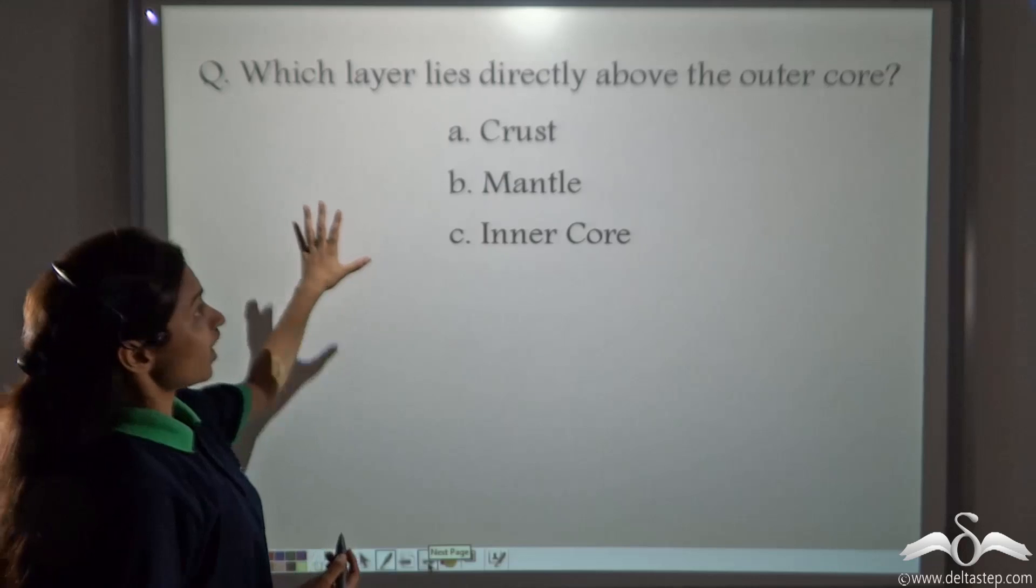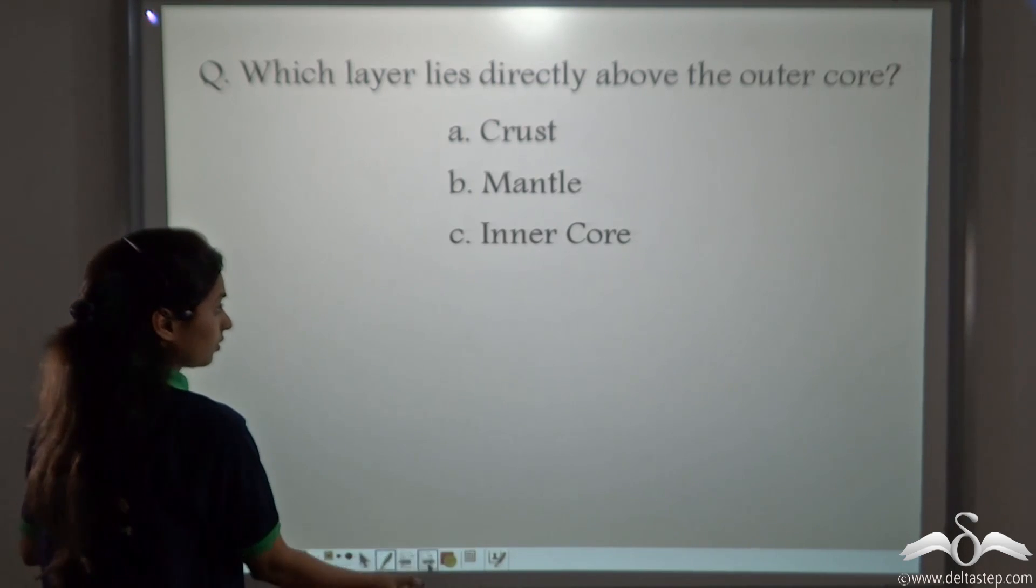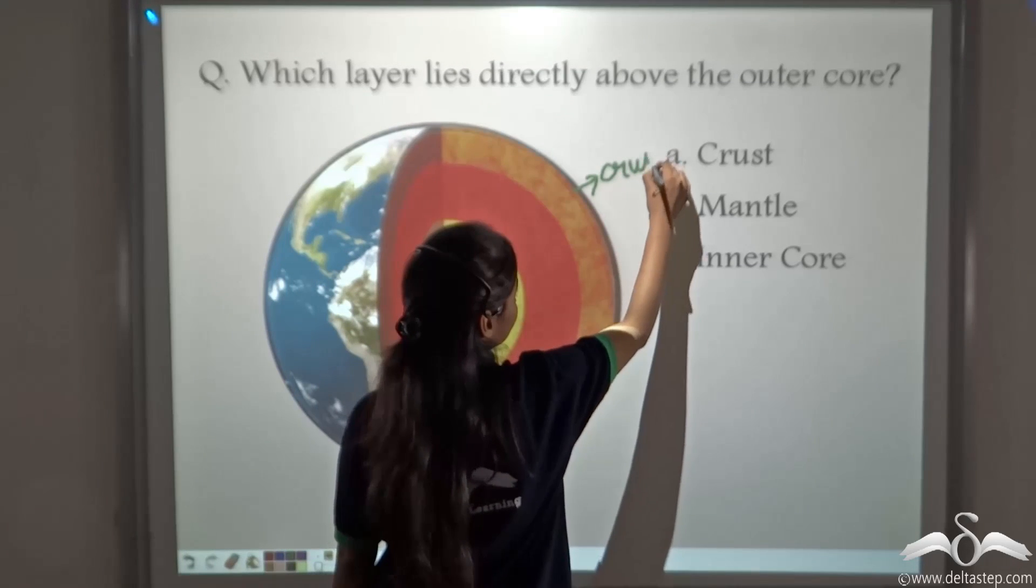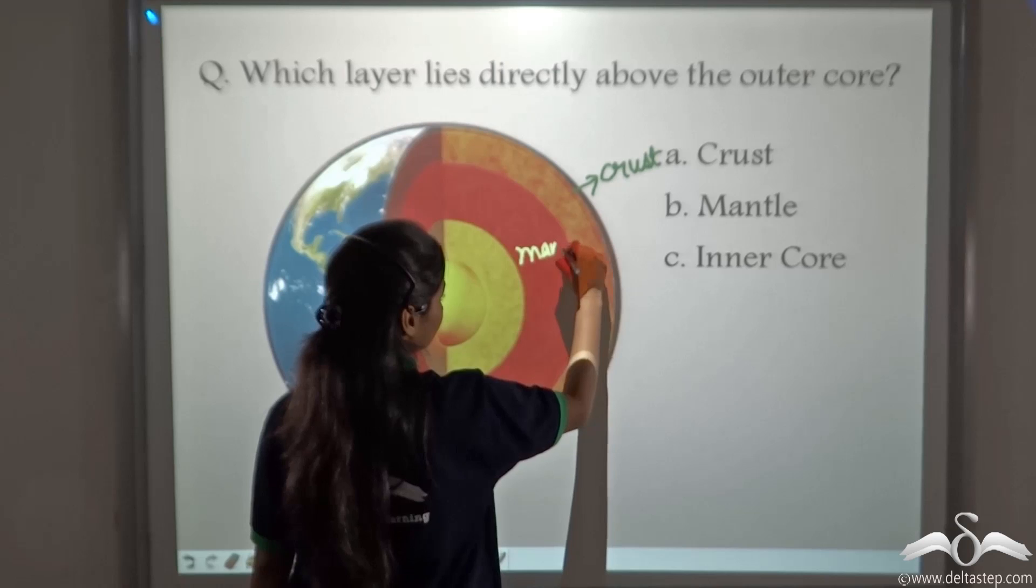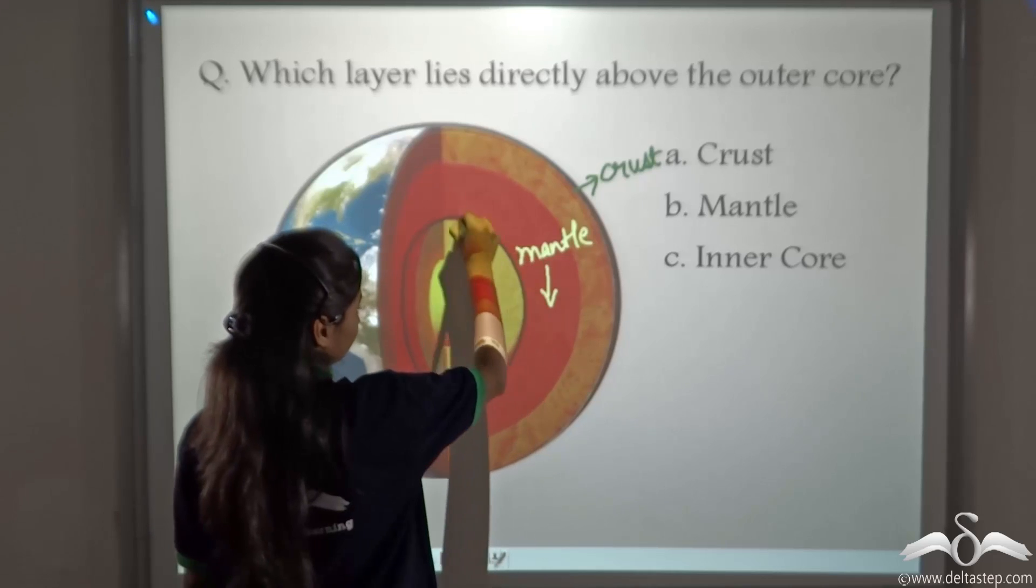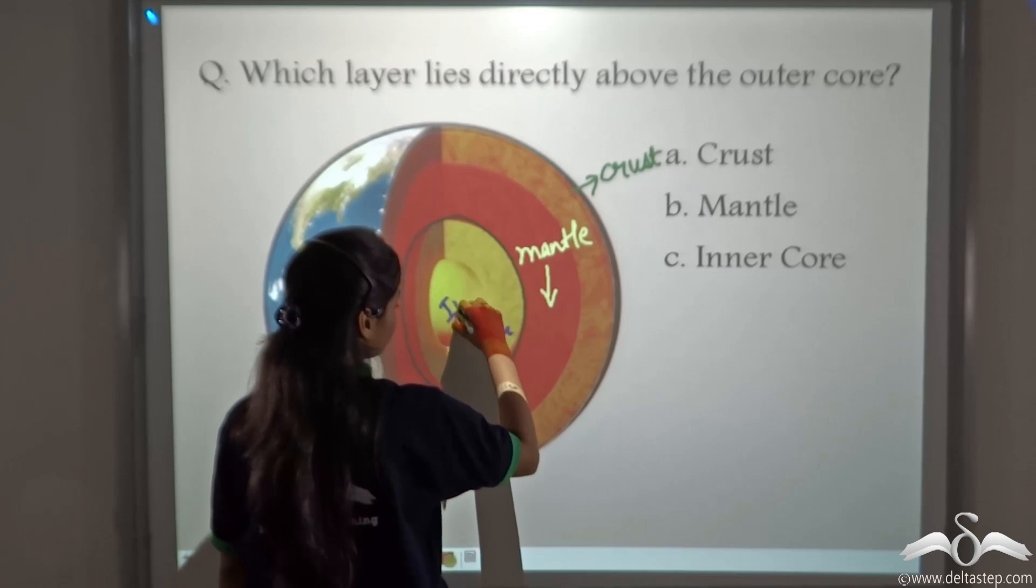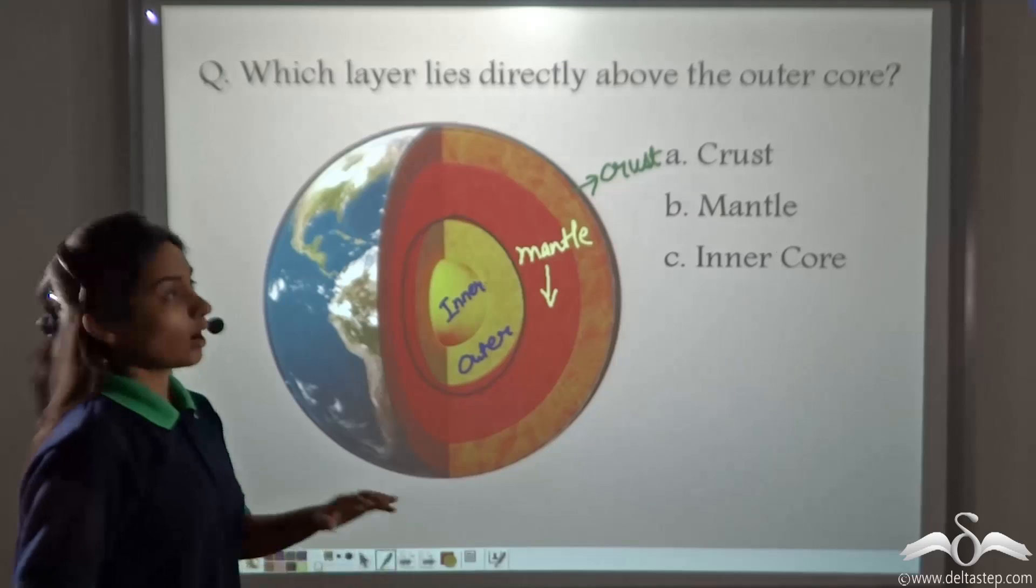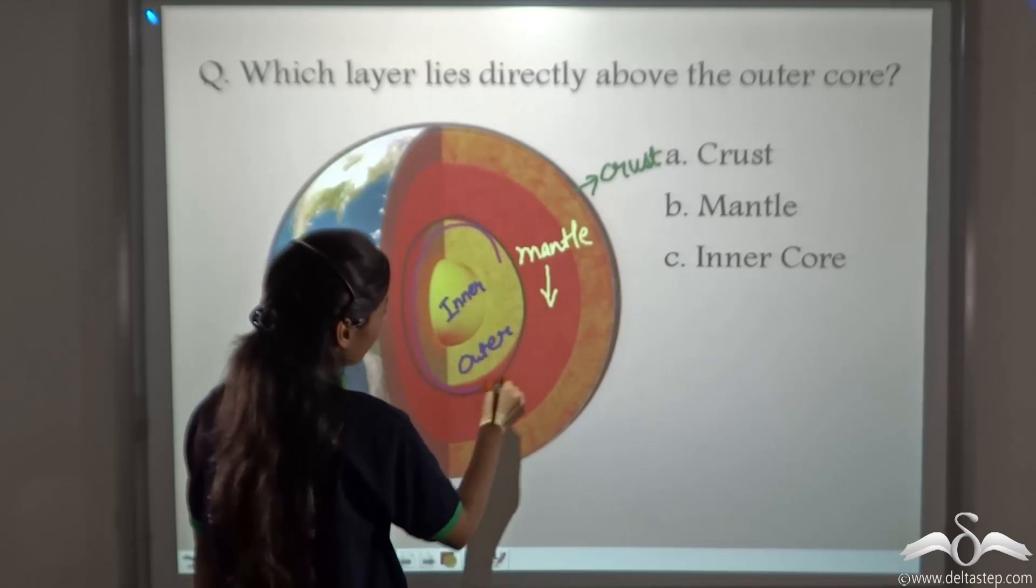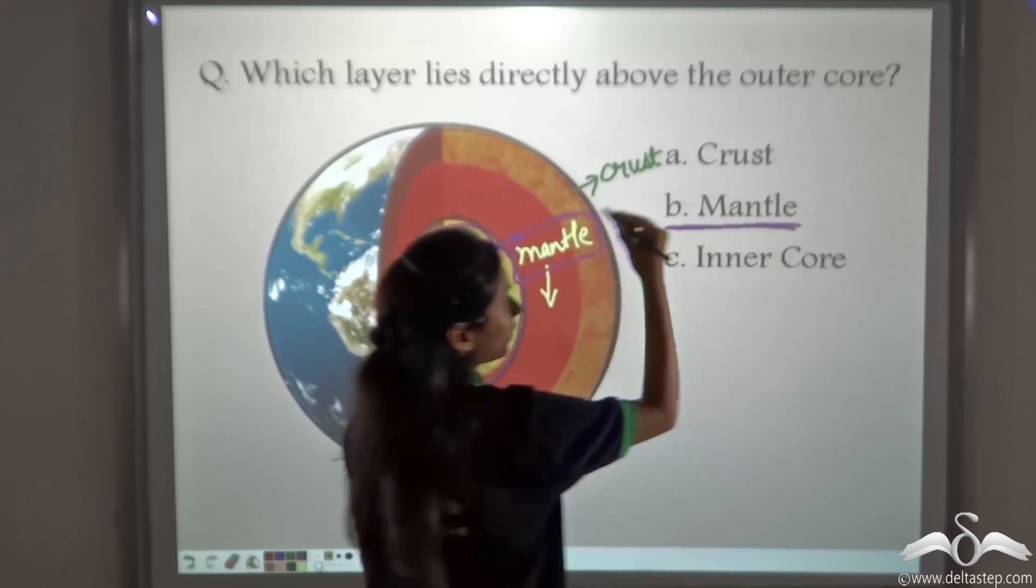Now tell me which layer lies directly above the outer core? Answer this. Let's check. We know that the outer part is called the crust. Then comes the mantle. And then comes the core. Now core can be divided into outer core and inner core. Which layer can you see directly above the outer core? So this is the outer core. Which layer is directly above this? It is the mantle. So we can say that mantle lies directly above the outer core.